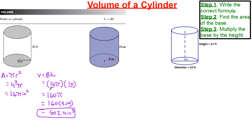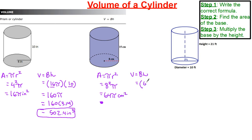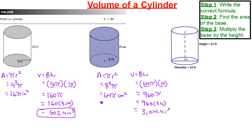I highly recommend saving pi until the very end to convert, so you'll have less math to do. Let's try two more. Volume equals base times height. Area equals pi r squared. r is 8, so 8 squared — keep in mind that's 8 times 8, not 8 times 2. 8 squared is 64, giving us 64 pi centimeters squared. Base 64 pi multiplied by height 15: 64 times 15 is 960 pi. Then 960 times 3.14 gives 3,014.4 inches cubed.